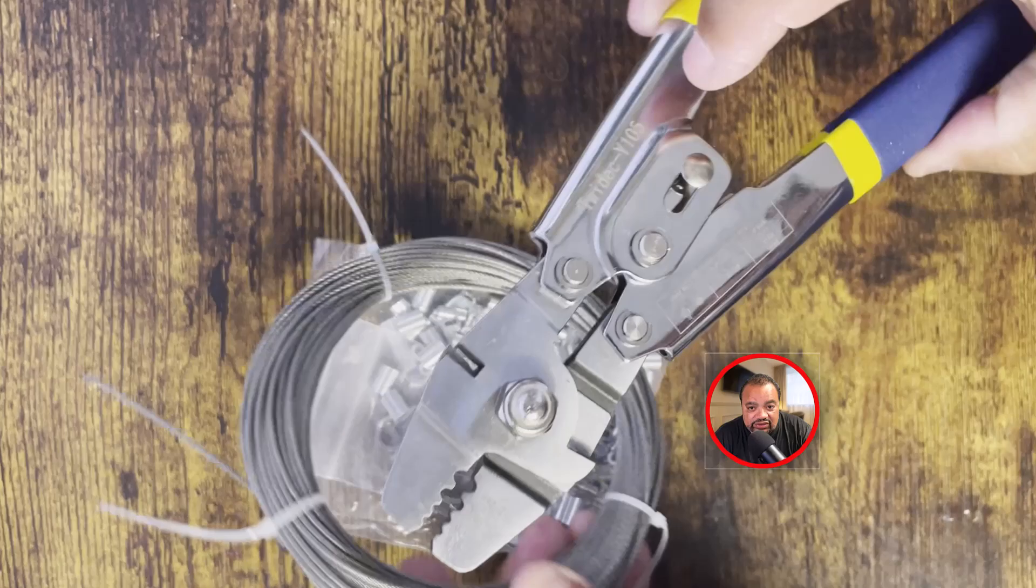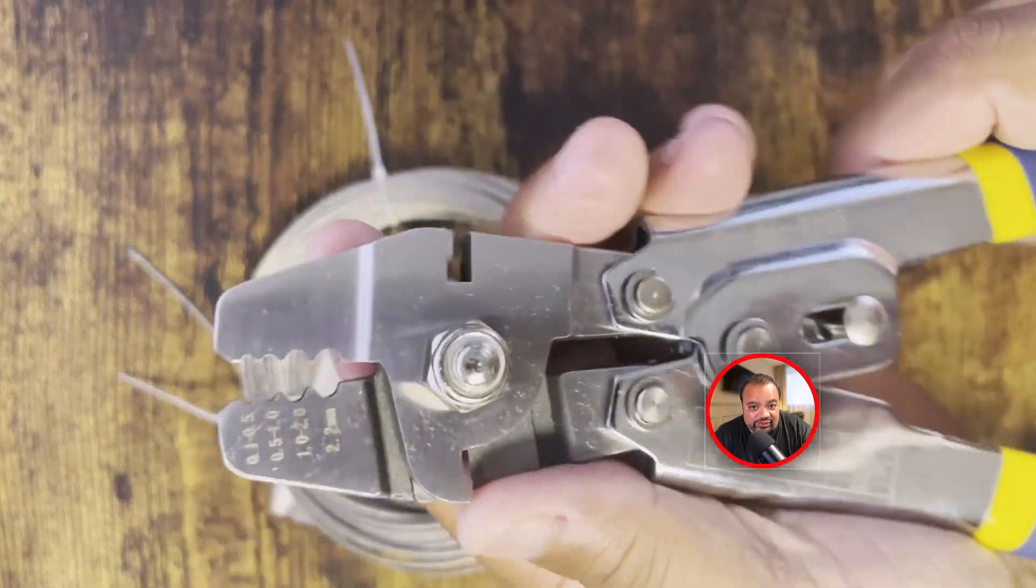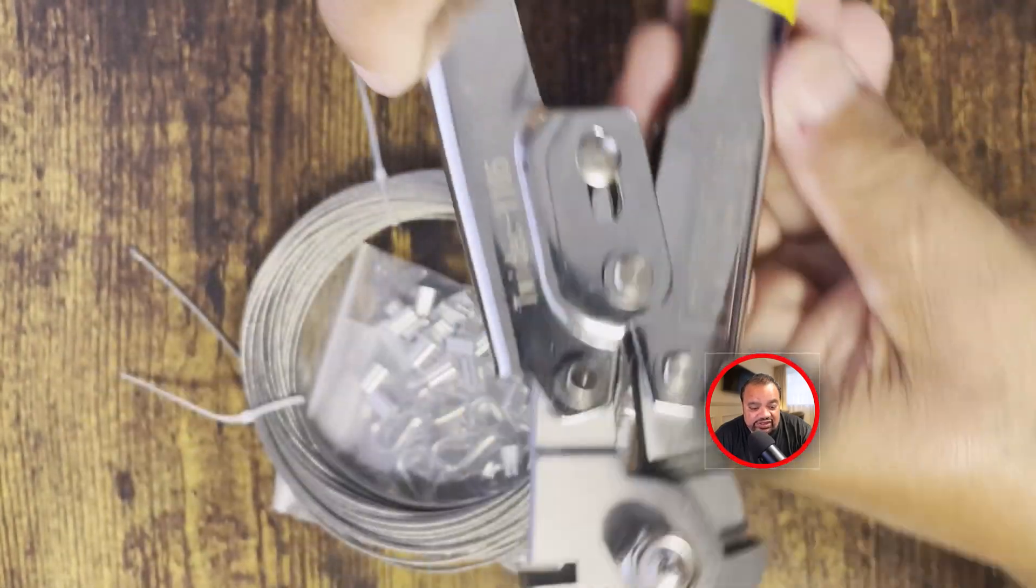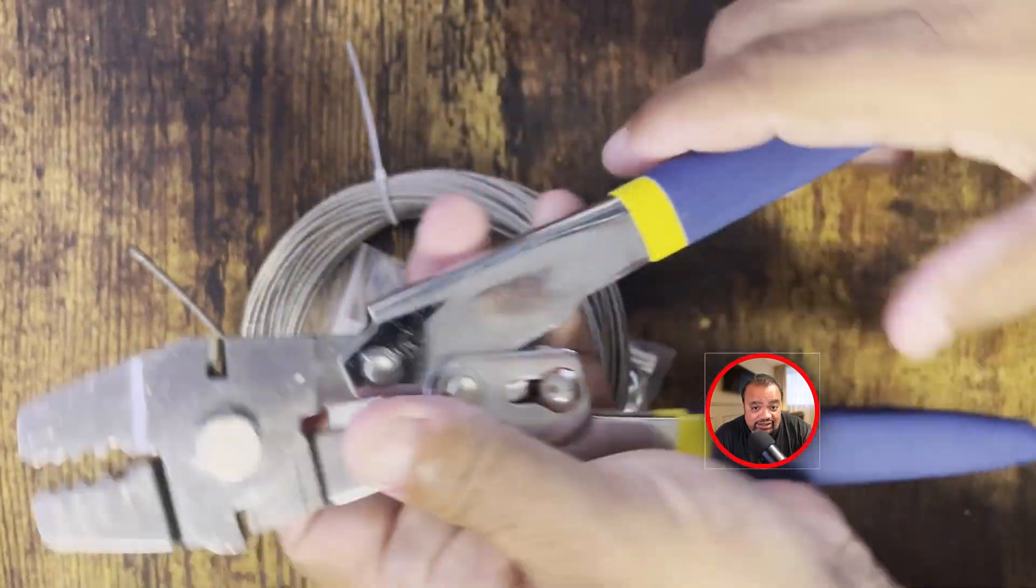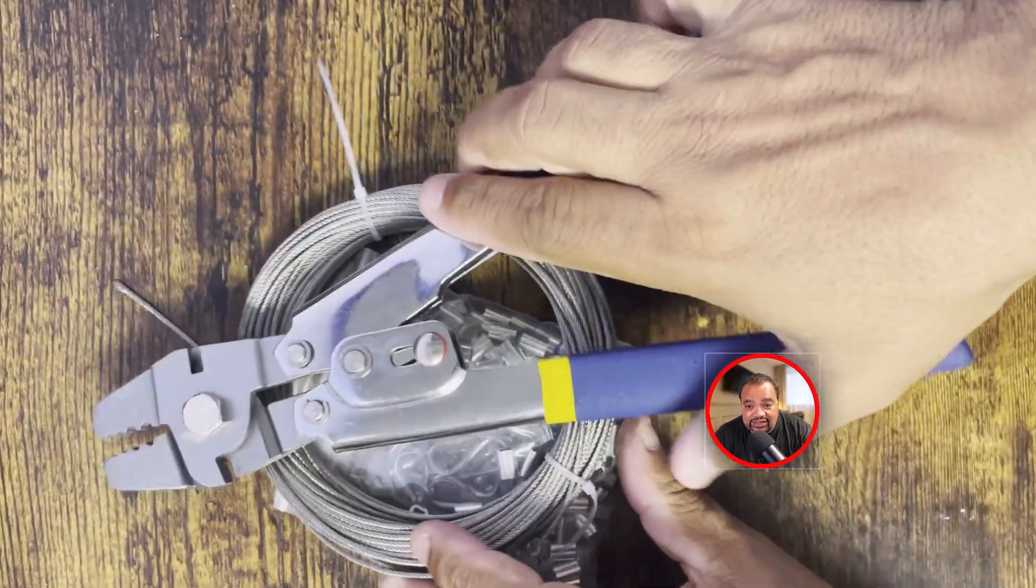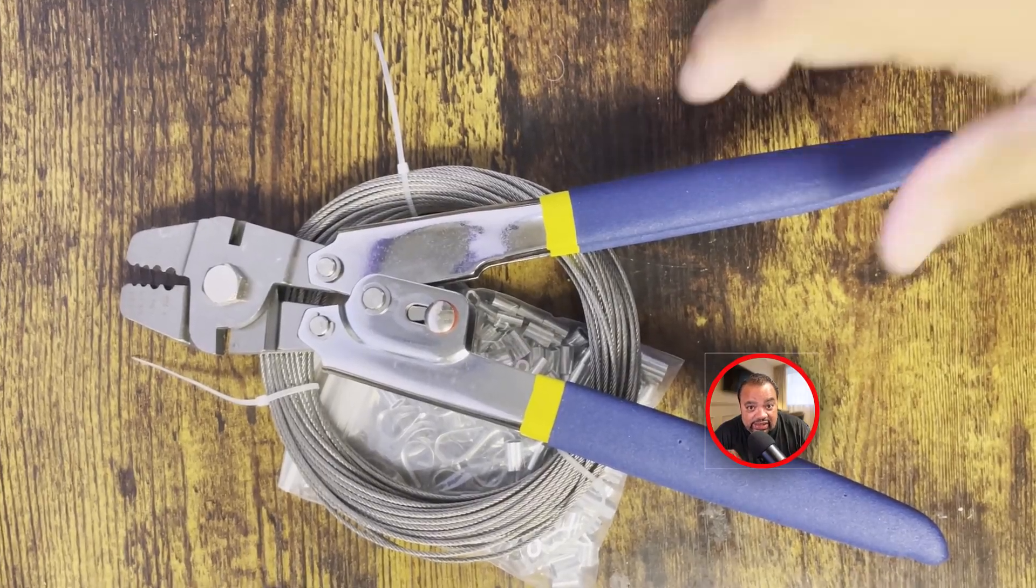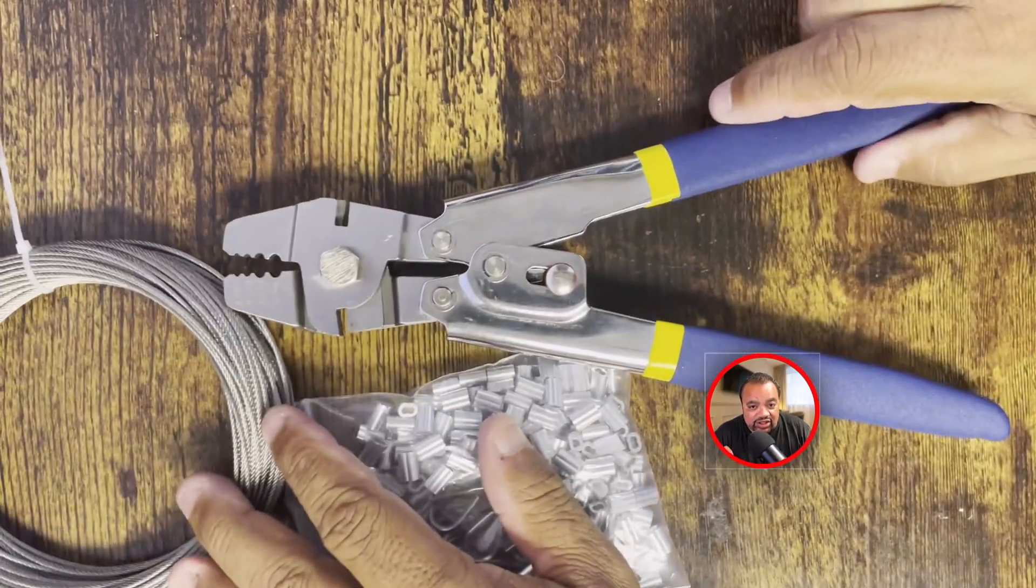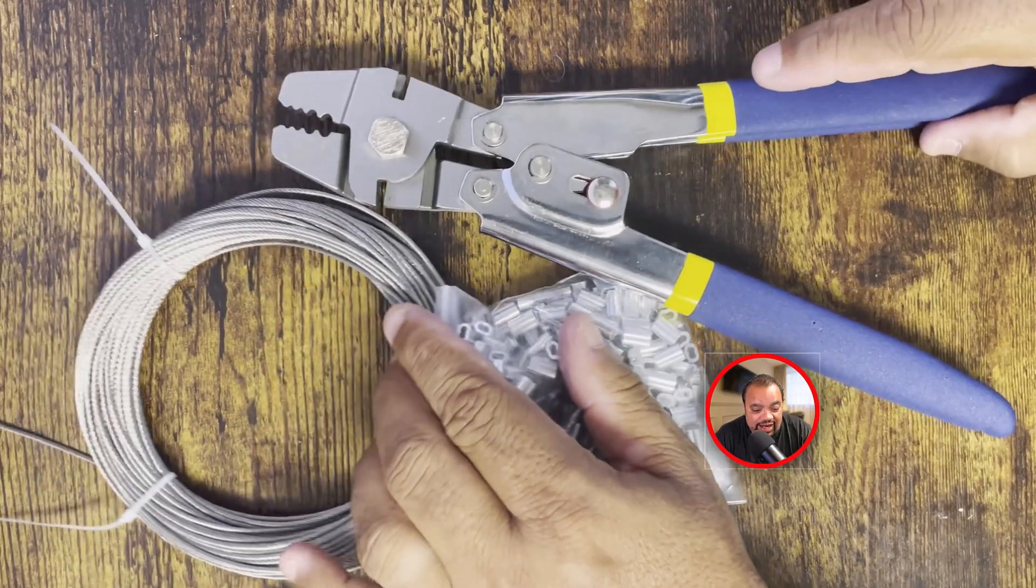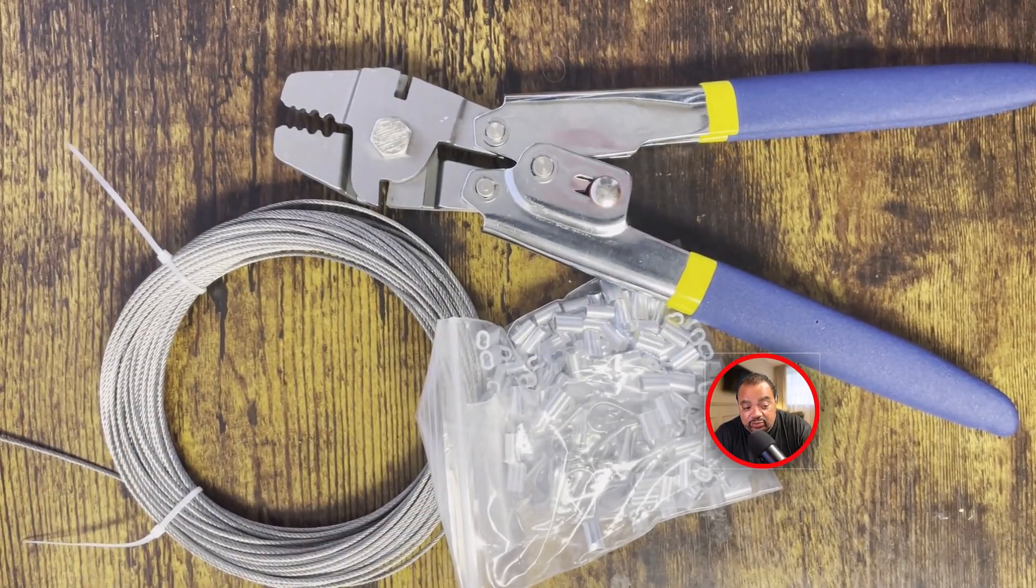And with the crimping tool, you see on the crimping tool you have a position where you can cut the wire rope. And it has various different crimping dimensions, so that way you can crimp just about anything. I highly recommend this product.